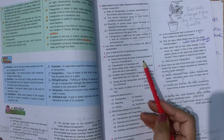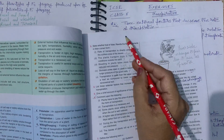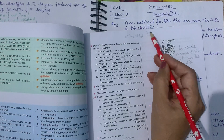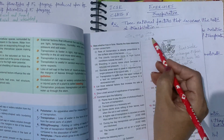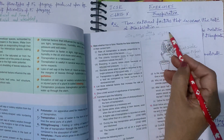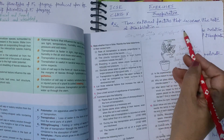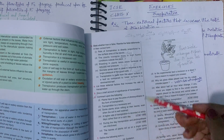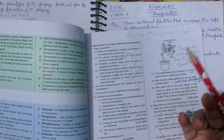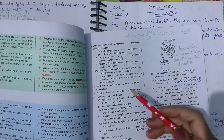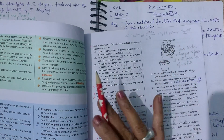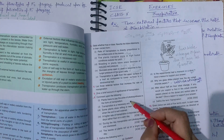During photosynthesis: carbon dioxide plus water, in the presence of sunlight and chlorophyll, form glucose and oxygen is given out. The more water is transpired, the more photosynthesis occurs. When photosynthesis happens, water transpires; when photosynthesis does not occur, transpiration is also reduced.